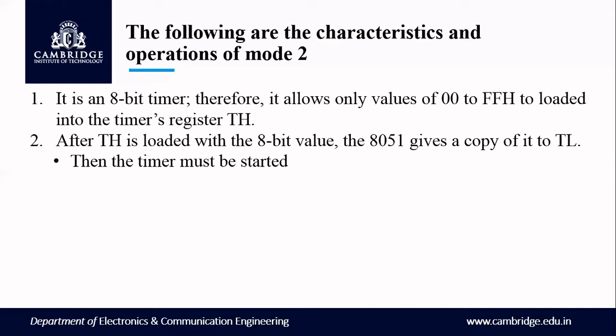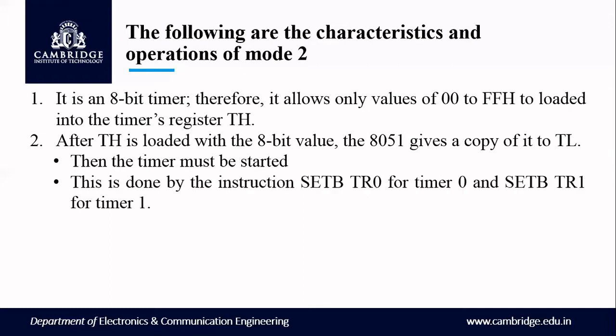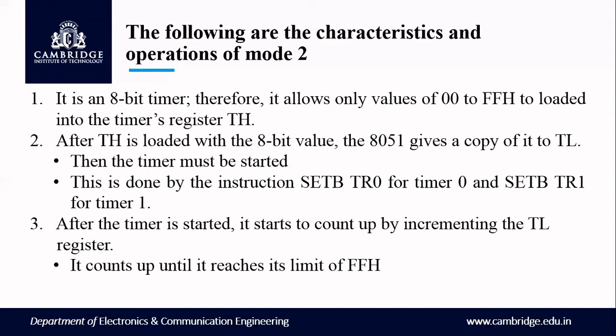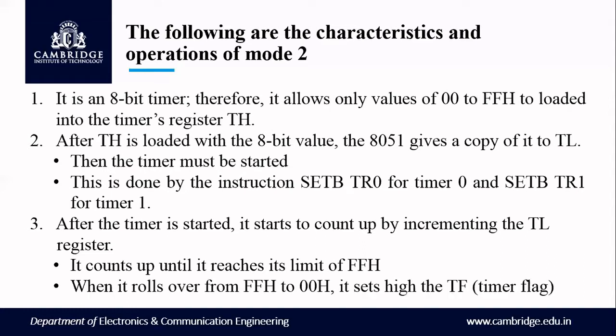Once a value is loaded into TH, it copies to TL, then we start the timer. We can start the timer using two instructions: set bit TR0 for timer 0, or set bit TR1 for timer 1. After the timer is started, it begins to count up by incrementing TL. TL counts up until it reaches its limit of FFH. When it rolls over from FFH to 00H, it sets the TF flag high.